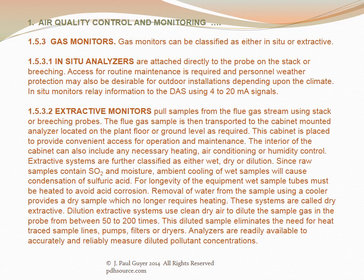Since raw samples contain SO2 and moisture, ambient cooling of wet samples will cause condensation of sulfuric acid. For longevity of the equipment, wet sample tubes must be heated to avoid acid corrosion. Removal of water from the sample using a cooler provides a dry sample which no longer requires heat — these systems are called dry extractive. Dilution extractive systems use clean dry air to dilute the sample gas in the probe by 50 to 200 times, eliminating the need for heat-traced sample lines, pumps, filters, or dryers. Analyzers are readily available to accurately measure diluted pollutant concentrations.